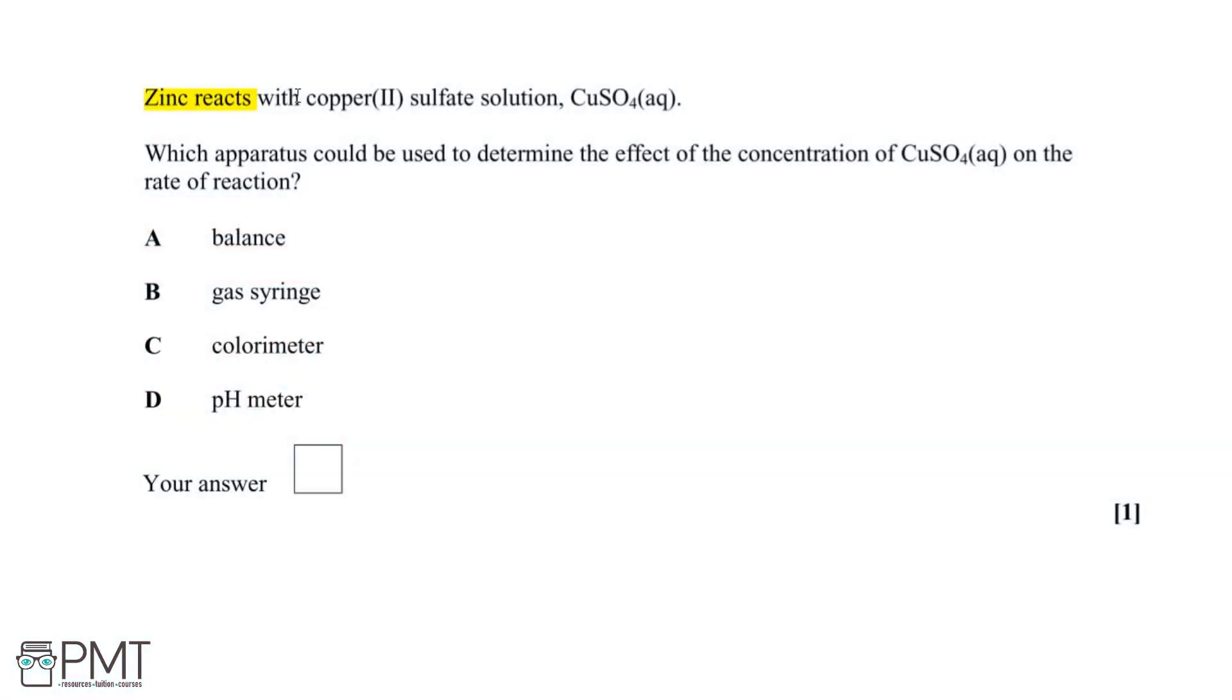We're told that zinc reacts with copper sulfate solution and we need to determine which apparatus can be used to determine the effect of the concentration of copper sulfate on the rate of reaction. So let's start by writing out a reaction equation so that we can see what sort of reaction we've got.